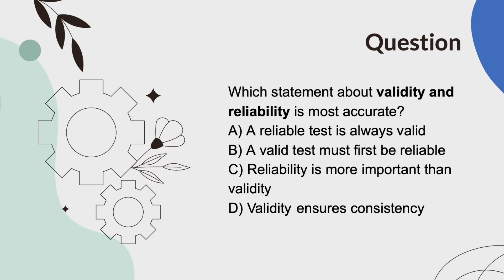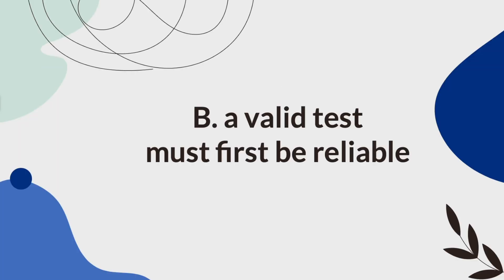Which statement about validity and reliability is most accurate? A, a reliable test is always valid. B, a valid test must first be reliable. C, reliability is more important than validity. Or D, validity ensures consistency. And the answer is B, a valid test must first be reliable.